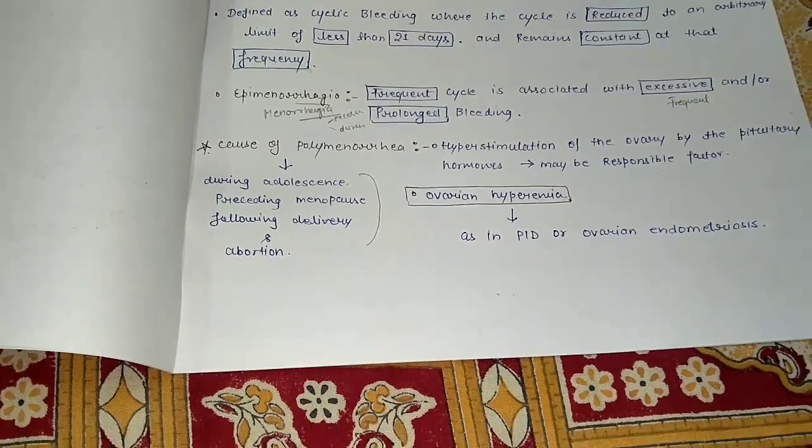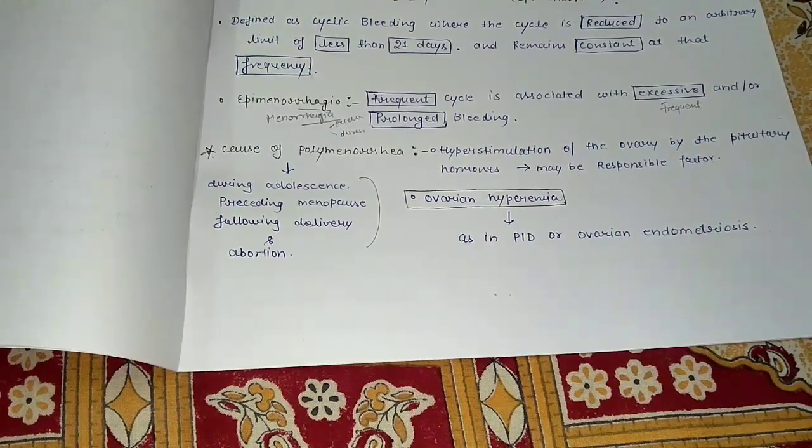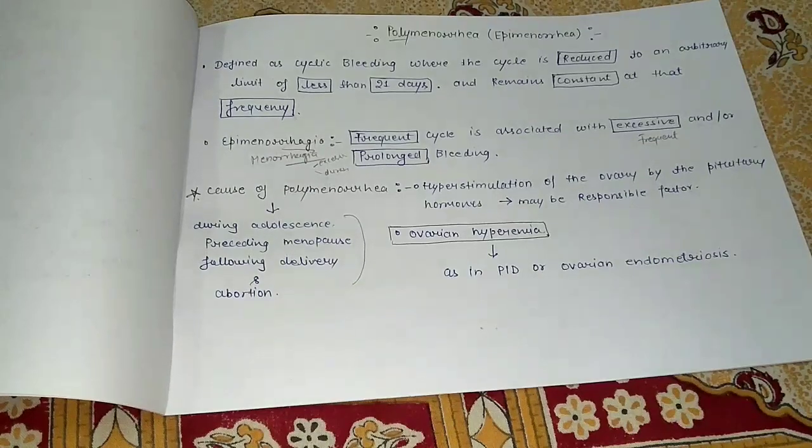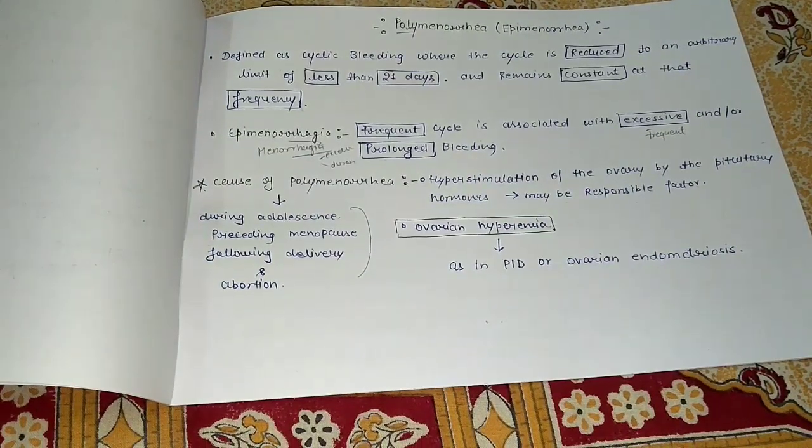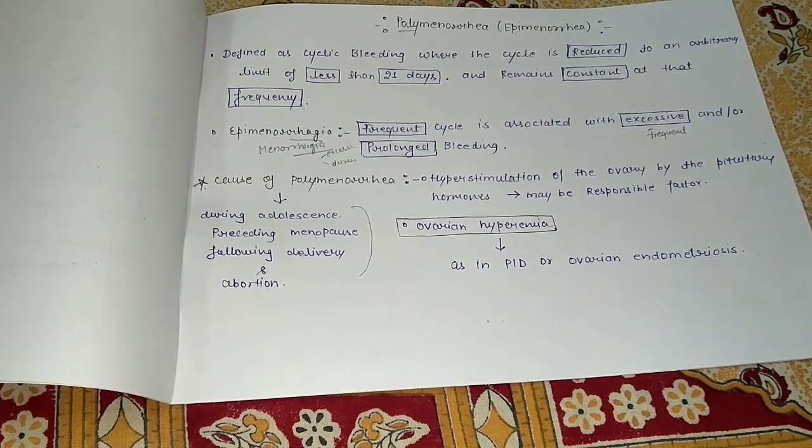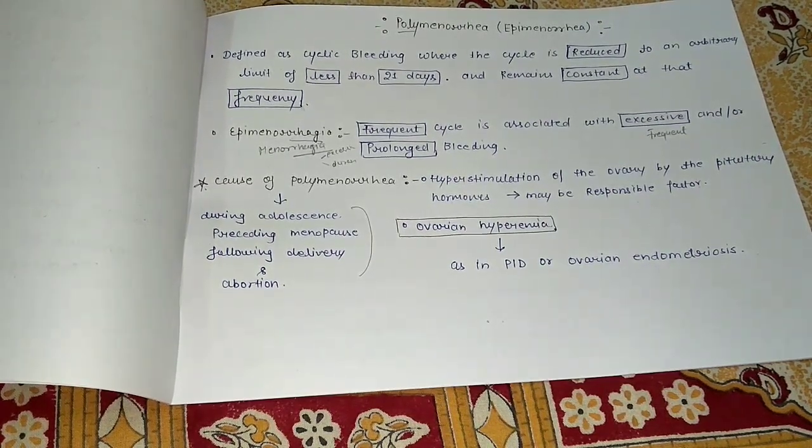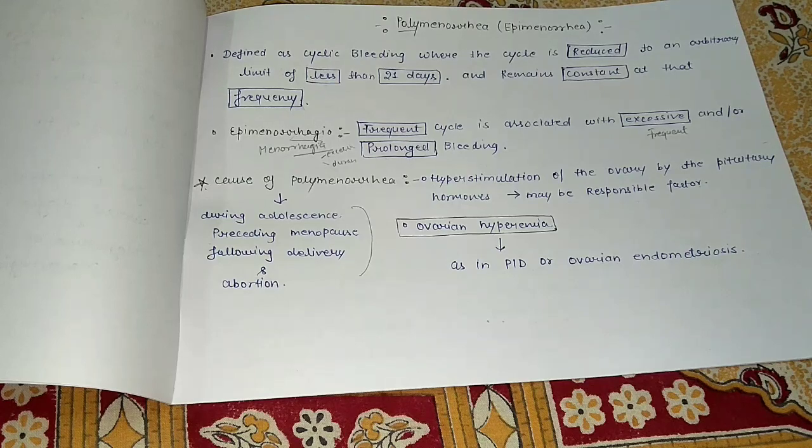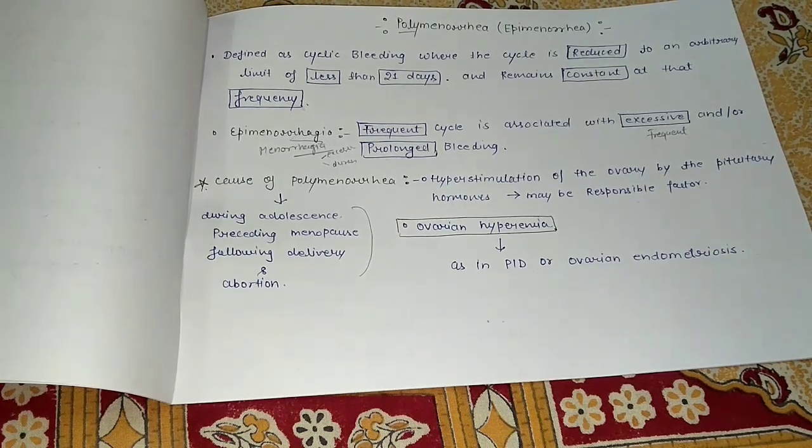So basically, we understand what polymenorrhea is. It is cyclic bleeding in which the cycle is reduced to an arbitrary limit of less than 21 days. And if bleeding is heavy or excessive, then we say this is epimenorrhagia.